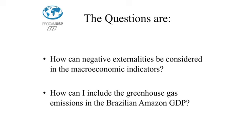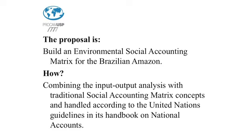The research questions and objectives of my project: How can negative externalities be considered in macroeconomic indicators like the GDP? And how can I include greenhouse gas emissions in the Brazilian Amazon GDP? My proposal is to build an environmental social accounting matrix for the Brazilian Amazon by combining two mathematical models — input-output analysis and the traditional social accounting matrix — handled according to the United Nations guidelines in its handbook on national accounts.